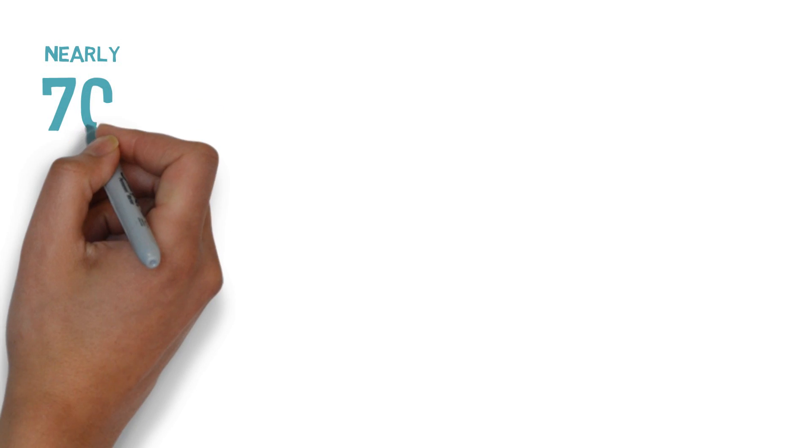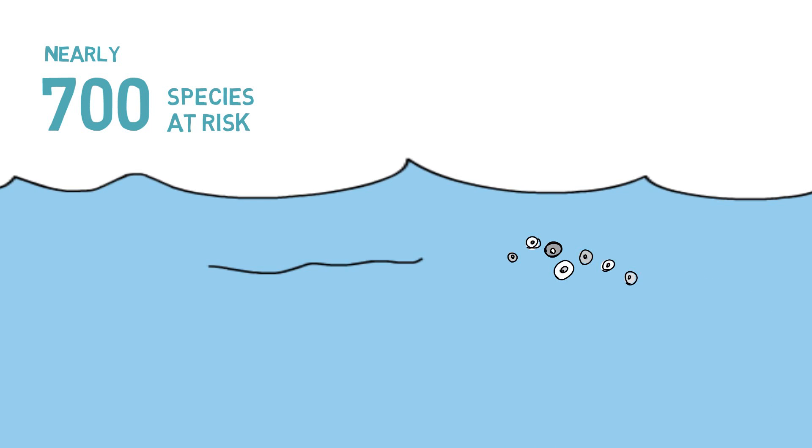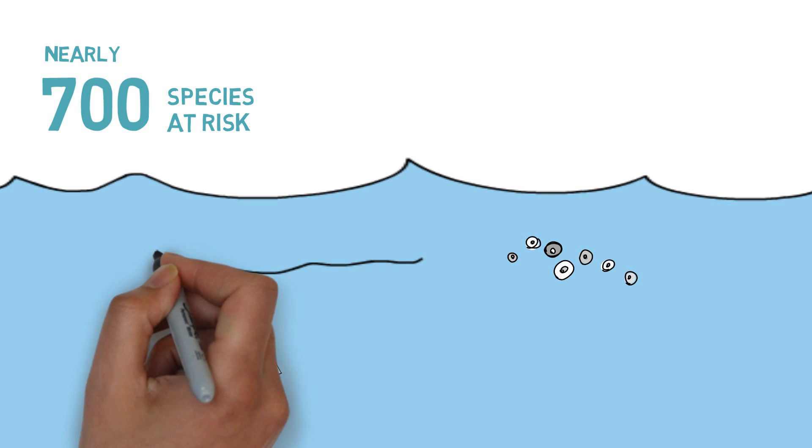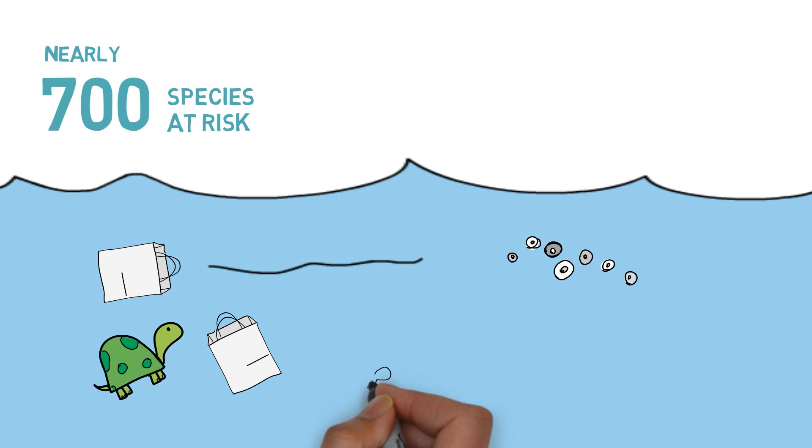Nearly 700 species of fish, animals and seabirds face problems due to the intake of plastic on a daily basis. Marine animals, like turtles or fish, accidentally ingest plastic debris,